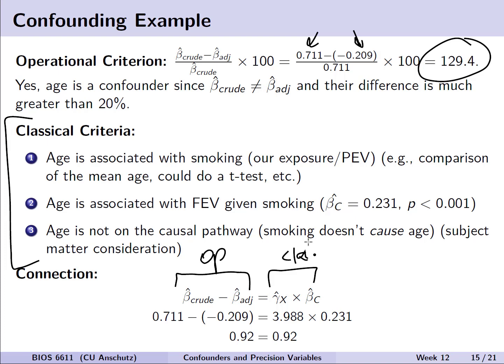We can also note the connection between the operational and classical approaches: the operational difference of beta hat crude minus beta hat adjusted equals, classically, gamma hat x times beta hat c. In this case, both equal 0.92, so either approach using those three models leads to the same conclusion.